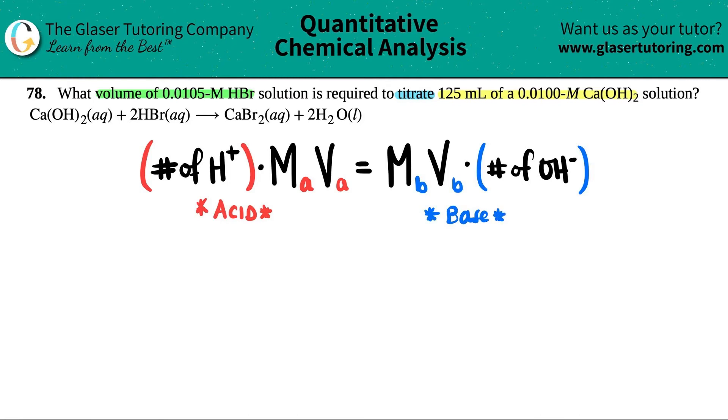And we already said who was which. HBr is the acid and Ca(OH)₂ is the base.